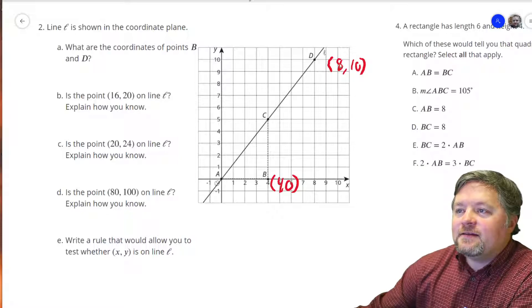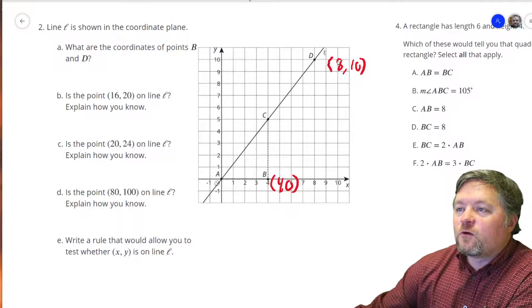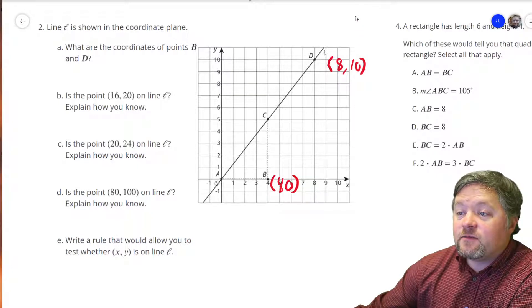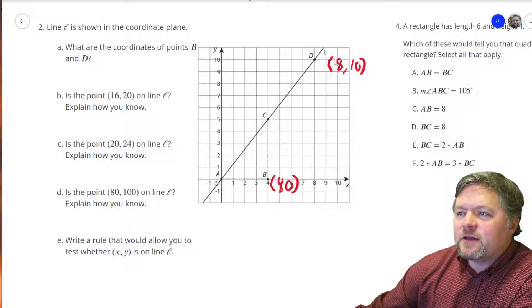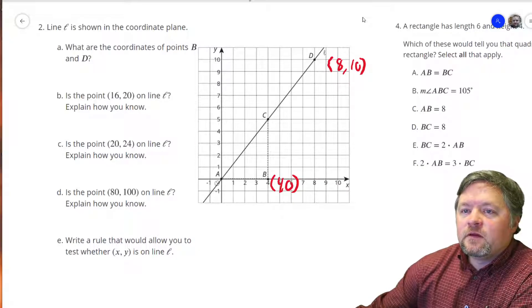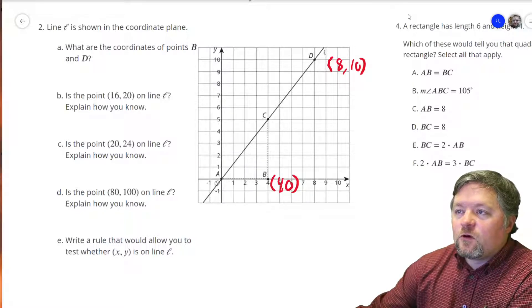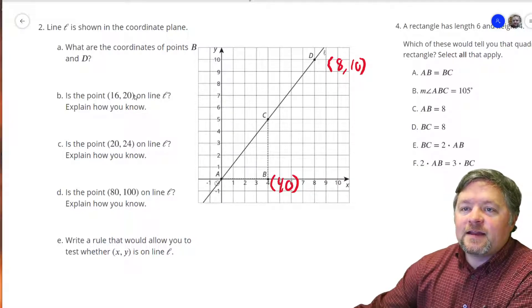So if we're at 8, 10, if we go forward 4 more, we'll rise 5 again. That would be the point 12, 15. Go 4 more forward, we will go 5 more up. That is 16, 20.